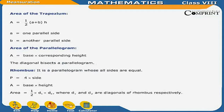Area of the Trapezium: A is equal to half of (a plus b) into H, where H is equal to the distance between the two parallel sides of the trapezium. A is equal to one parallel side, and B is equal to another parallel side.